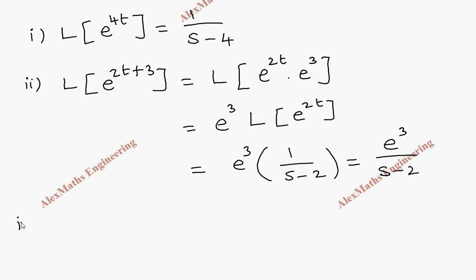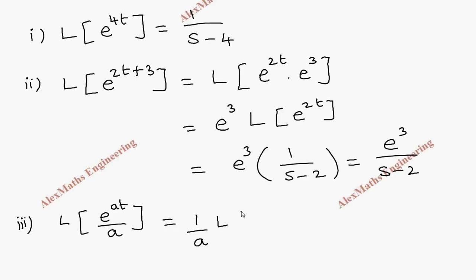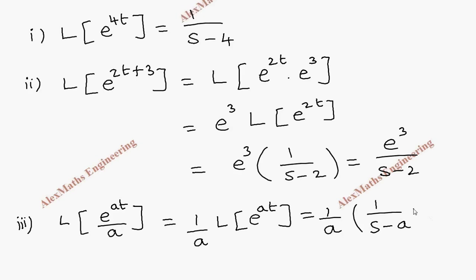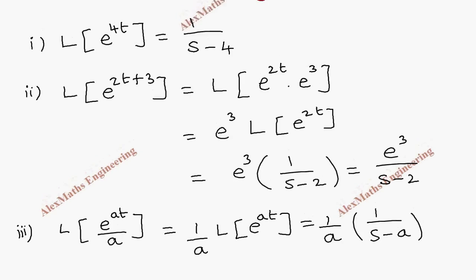For the third subdivision we have L{e^(at)/a}. We can take the constant 1/a outside, leaving us with L{e^(at)}. So this becomes (1/a) · 1/(s - a), which equals 1/[a(s - a)].